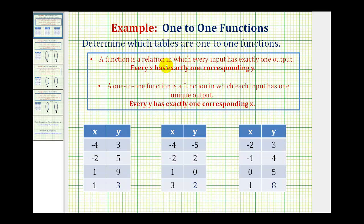A function is a relation in which every input has exactly one output. Remember, the inputs are the x values, or the domain, and the outputs are the y values, or the range. An easier way to think of this is: a relation is a function if every x has exactly one corresponding y value.